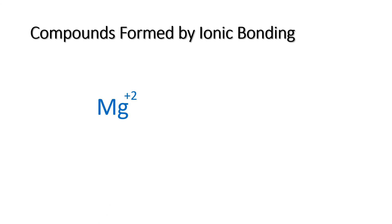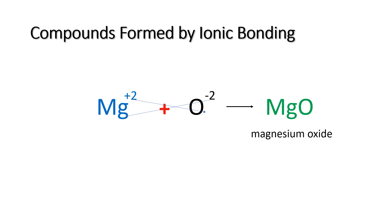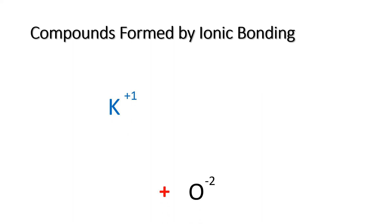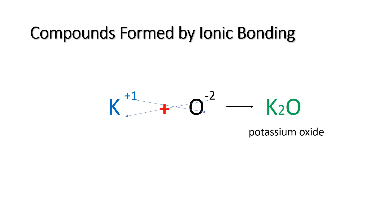The next one is magnesium plus 2 and oxide negative 2. If we criss-cross their charges, since both have the same numerical value of 2, their subscripts cancel out. So it simplifies to MgO, or magnesium oxide. For potassium plus 1 and oxide negative 2, if we criss-cross their charges, the chemical formula becomes K₂O, or potassium oxide. The numerical charge of oxide becomes the subscript of potassium, and the 1 from potassium becomes the subscript of oxygen — but we do not write 1. So it is simply K₂O, or potassium oxide.